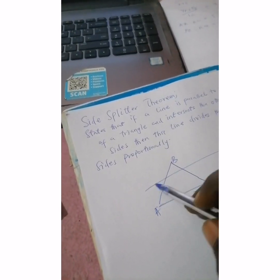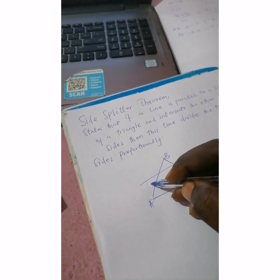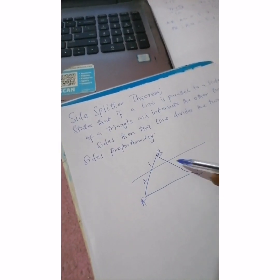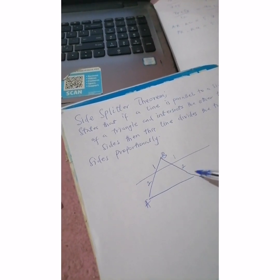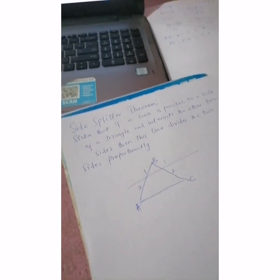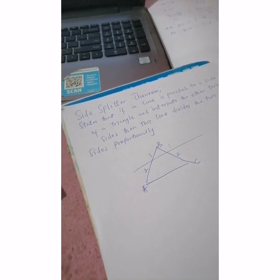So if this line divides AB in a ratio 2 to 1, then it divides the other side in a ratio 2 to 1 as well. If it divides in a ratio 3 to 5, then it also divides the other side 3 to 5. We are going to use this theorem to solve question 4 — it's a very key theorem for this question.